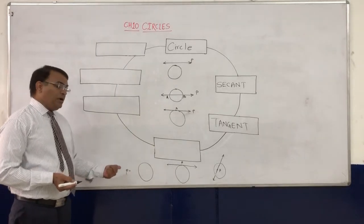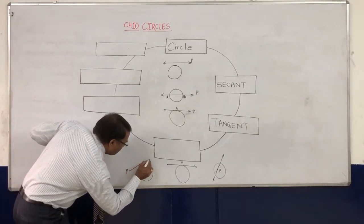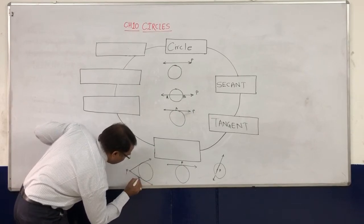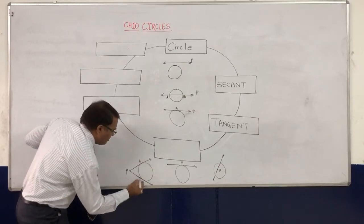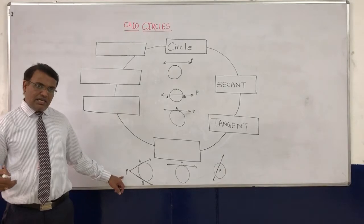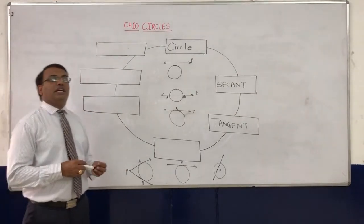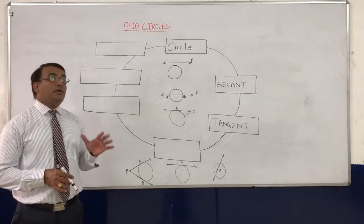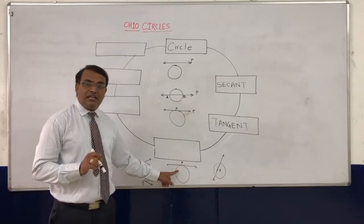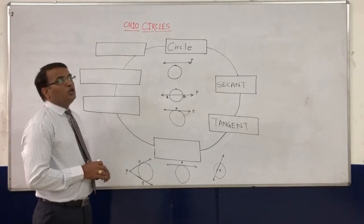The third and last case is where the point is outside of the circle. In that case, you will see that there are two different lines you can draw, and both touch the circle at only one point each. So if the point is outside the circle, it will have at most only two tangents. The number of tangents depends on the position of the point: inside — no tangent; on the circle — one tangent; outside — two tangents.